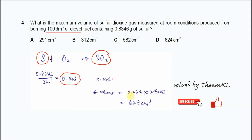Once we get this mole, we multiply by the molar volume, which is 24,000 cm³. So you get 624 cm³, which is answer D.